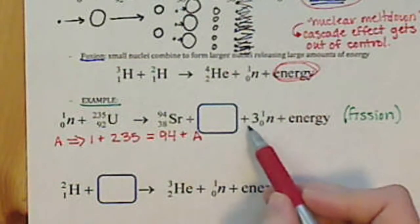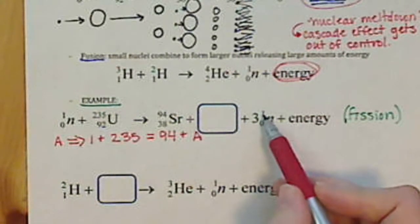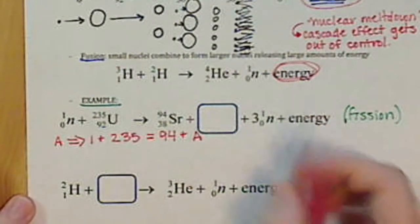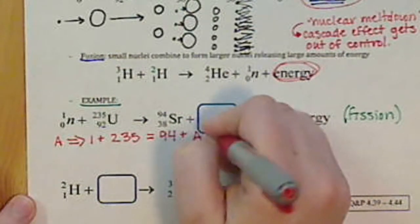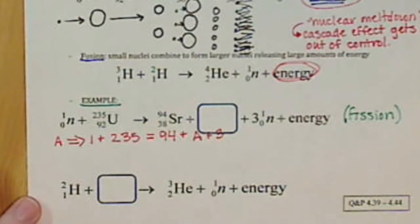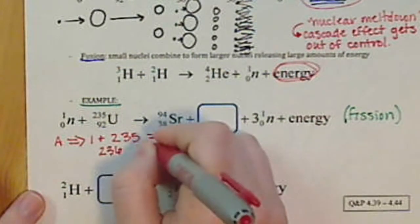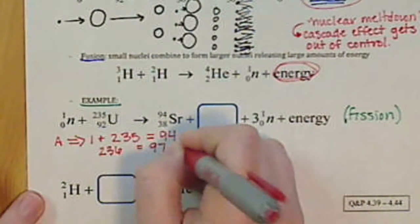And then we have our neutron here, which has a mass number of one, but remember this is our coefficient. So we have three of our neutrons. So we have a total mass number of three for that equation. So we have 236 is equal to 97 plus A.